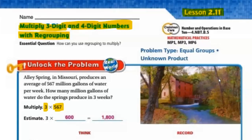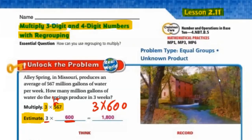We have to multiply 3 by 567. First of all, let's estimate. To estimate, you have to round the big number. 6 is a strong number, so 5 becomes 6 and we add 2 zeros. So it will be 3 multiplied by 600. 3 multiplied by 6 equals 18, and put the two zeros, so it will be 1,800.